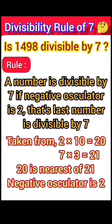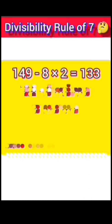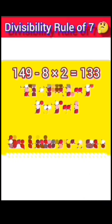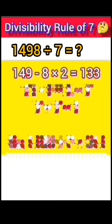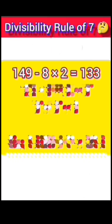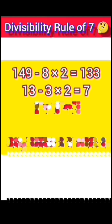Step 1: 149 minus last digit 8 times negative osculator 2 equals 133. Step 2: 13 minus last digit 3 times negative osculator 2 equals 7.